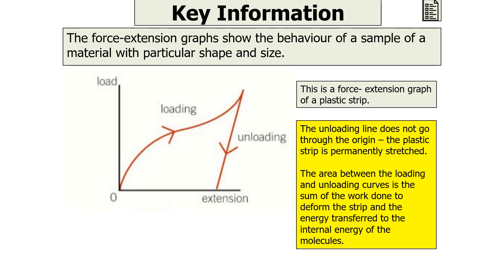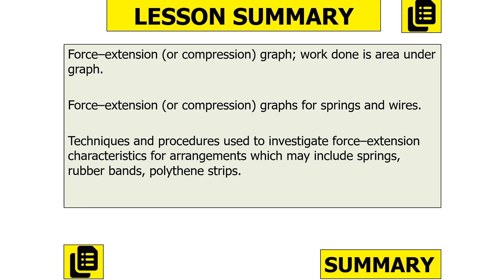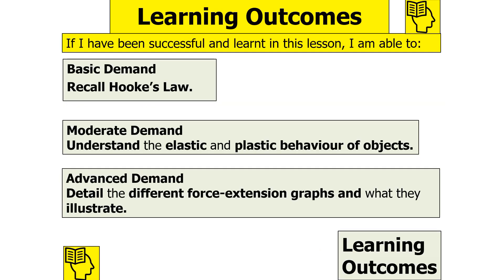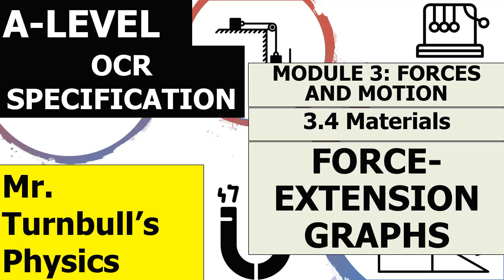That brings an end to our lesson today. In today's lesson, we looked at force extension graphs and the work done being the area under the graph, considered force extension graphs for both springs and wires, and considered how to investigate force extension characteristics for arrangements including springs, rubber bands, and polythene strips. We should now be able to recall Hooke's Law, understand the elastic and plastic behaviour of objects, and detail the different force extension graphs and what they illustrate. That brings an end to our lesson for Module 3, Forces of Motion, on the subtopic of 3.4 materials on the concept of force extension graphs. Thank you very much for watching.